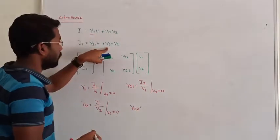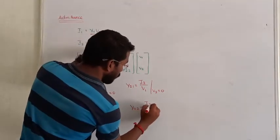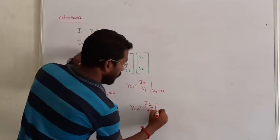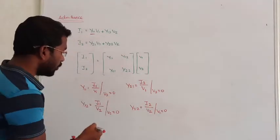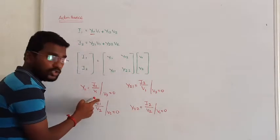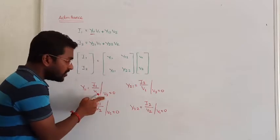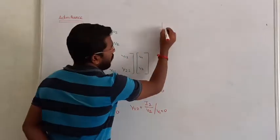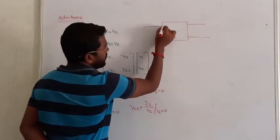Similarly, y22 equals i2/v2 when we make the value of v1 equal to 0.